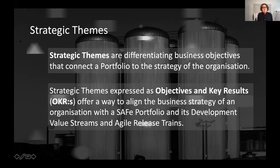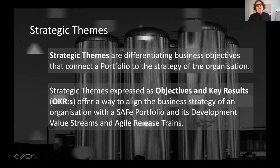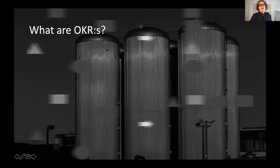A lot of the time, we use the same patterns when we talk about business alignment. When the development value streams and the agile release trains try to achieve their goals, they are achieving the goals of the operational value streams. So if we have a pattern of communicating the strategic directions that we are trying to achieve in the operational value streams, why not use the same in the development value streams? That's what we're doing with OKRs.